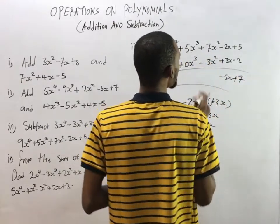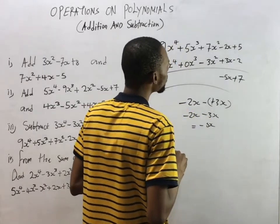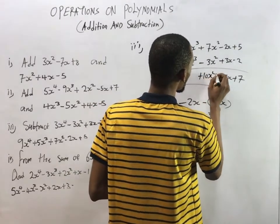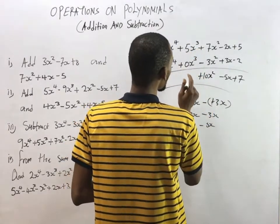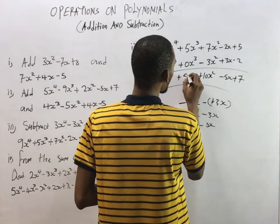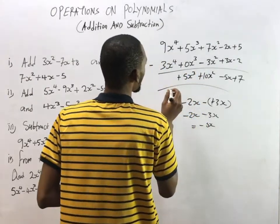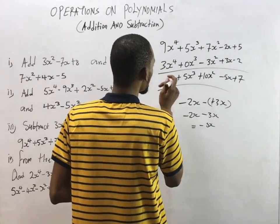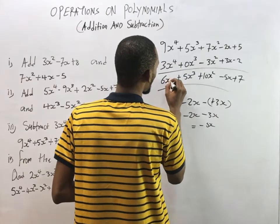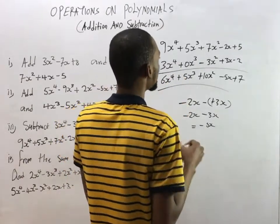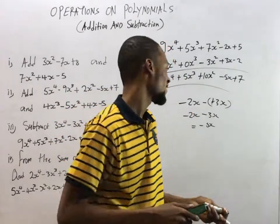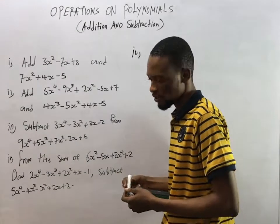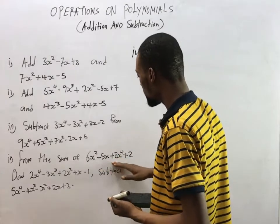Continuing: 7s² minus (-3s²) gives +10s². Then 5s³ - 0s³ = 5s³. And 9s⁴ - 3s⁴ = 6s⁴. So that's the complete answer — we've successfully subtracted the polynomials. Now let's look at the last question.